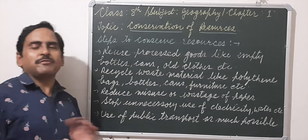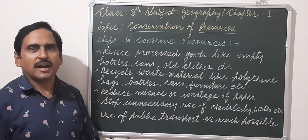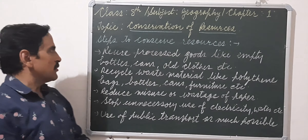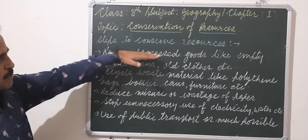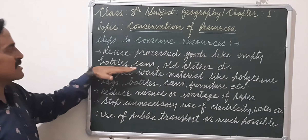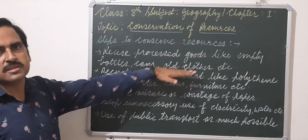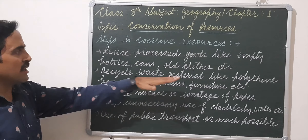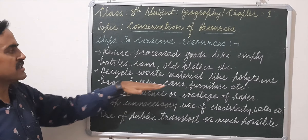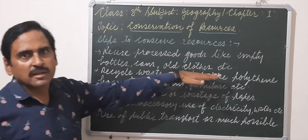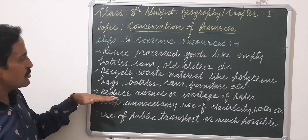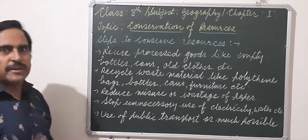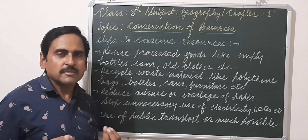There are a number of ways by which we can conserve our resources. Let's discuss some of the steps. First, reuse processed goods like empty bottles, cans, old clothes, etc. Second, recycling of waste materials like polythene bags, bottles, cans, furniture, etc. Third, reduce misuse or waste of paper, because manufacturing paper involves a lot of cutting of trees.